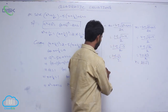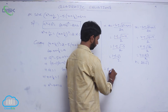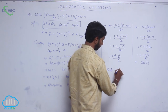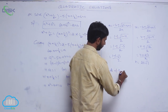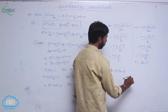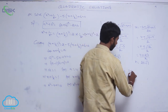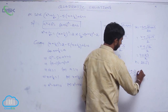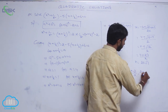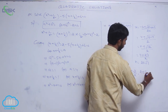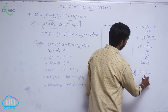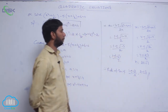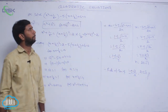Therefore, the roots of the equation are 1 plus or minus i root 3 by 2, and 2 plus or minus root 3.